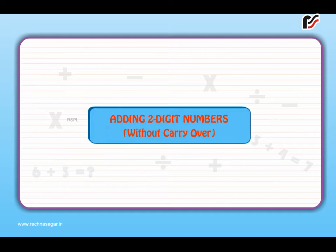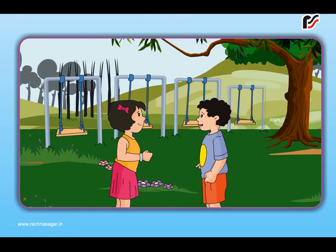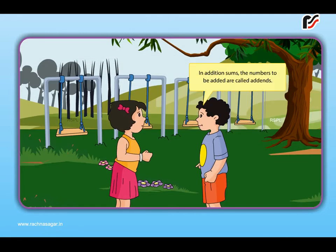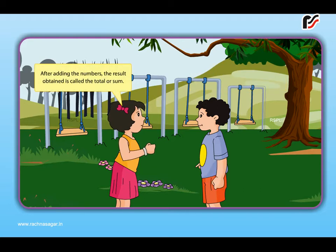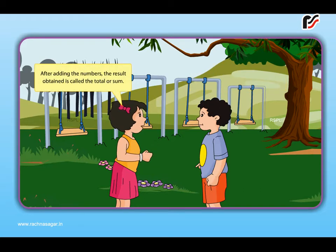Adding two-digit numbers without carry over. In addition sums, the numbers to be added are called addends. After adding the numbers, the result obtained is called the total or sum.